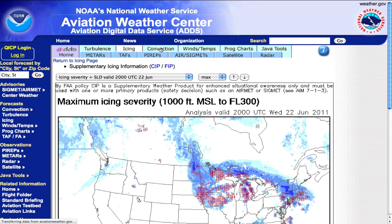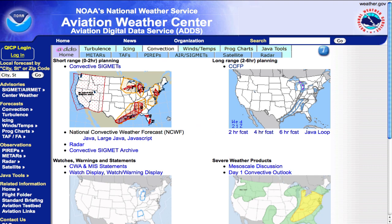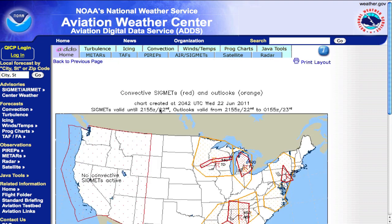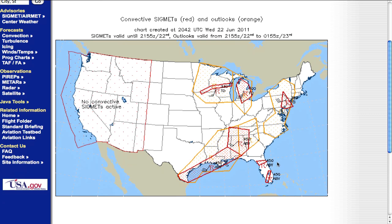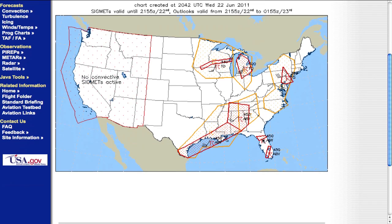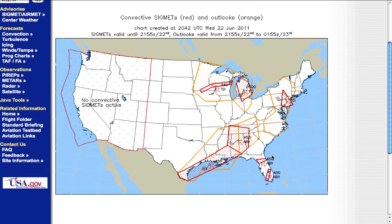Let's look at the convection tab — that's next. This is another great tab for looking at convective sigmets. And sure enough, as you can see, we have convective sigmets. Clicking on convective sigmets, we see that we have a few in the Florida Panhandle and some north of Tampa. Along our route, we're looking at tops of 45,000 feet and above for those thunderstorms, plus heavy rain showers. The orange color here represents outlooks for convective sigmets, while the red areas are the actual current convective sigmets.